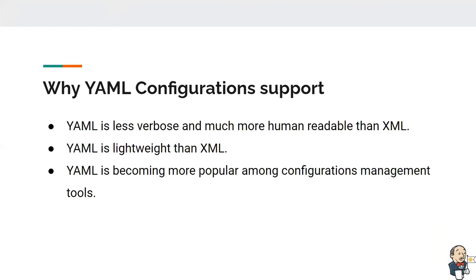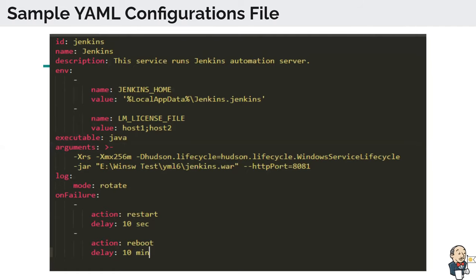Why are we moving to YAML configuration? YAML is less verbose and much more human readable than XML or JSON. YAML is also lightweight — not using extra delimiters like angle brackets. YAML is becoming more popular among configuration management tools, so it's very reasonable to move to YAML configuration. In the future, developers can easily configure Windows service wrapper with YAML. You can see it's much more human readable than the XML version.